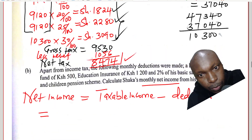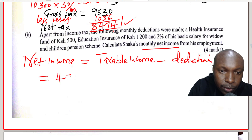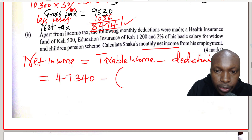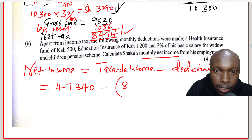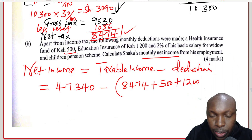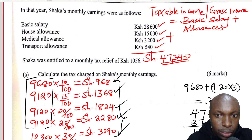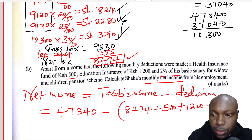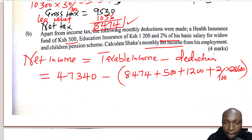The taxable income obtained in the first part is 47,340. Then we subtract all the deductions. The first deduction is the net tax of 8,474. Plus we have the health insurance fund of 500. Plus we have education insurance of 1,200. And then we have 2% of the basic salary. The basic salary is 28,600.